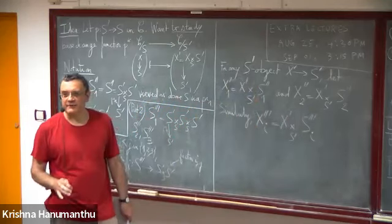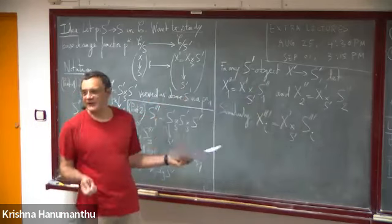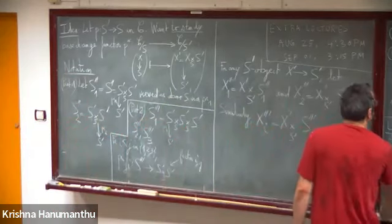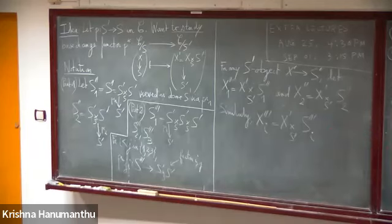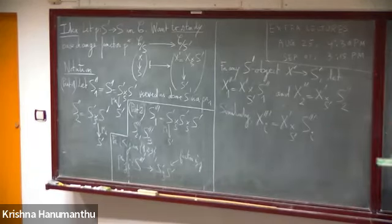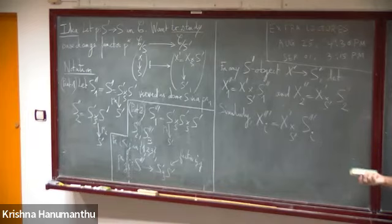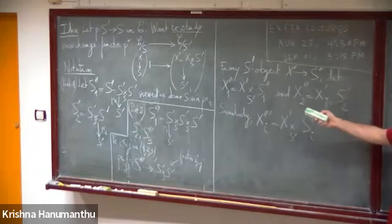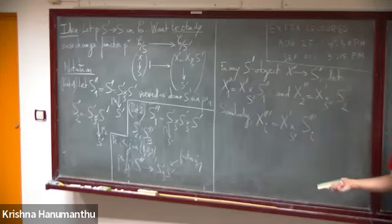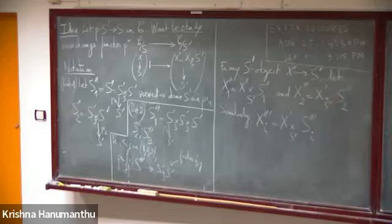This all looks very abstract, but these objects are technical tools to decide whether X' comes by base change or not. If X' = X ×_S S' is a fiber product, then these objects have special properties, which will give the criterion to decide whether X' comes from below.